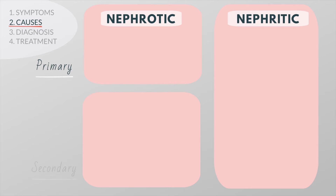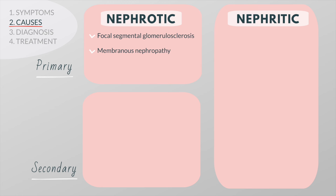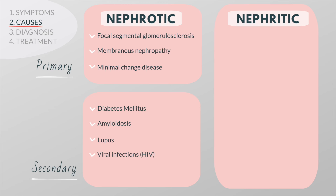Nephrotic syndrome can be primary or secondary. The most common primary causes are focal segmental glomerulosclerosis, membranous nephropathy, and minimal change disease. The most common secondary causes include diabetes, amyloidosis, lupus, and certain viral infections such as HIV. A number of drugs that are toxic to the kidneys can also cause nephrotic syndrome, especially anti-inflammatory drugs.